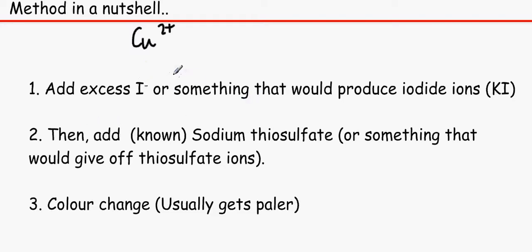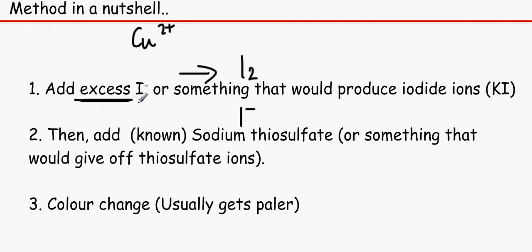That gets oxidized to iodine. Then we need to add a known concentration and volume of sodium thiosulfate, which then reduces it back to I-. We want to find out how much iodide ions have actually reacted with it. And then hopefully there will be a colour change from a brownish colour and you usually get paler. Experimentally we would add starch to find out the end point and probably draw a titration curve on that.